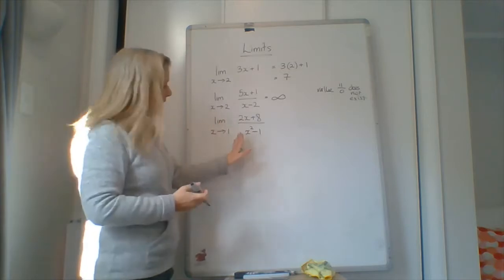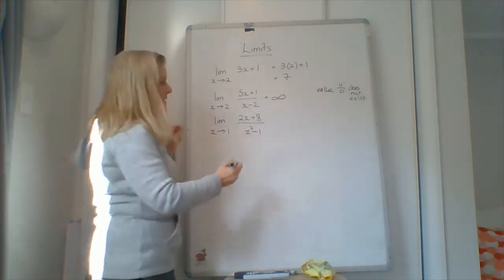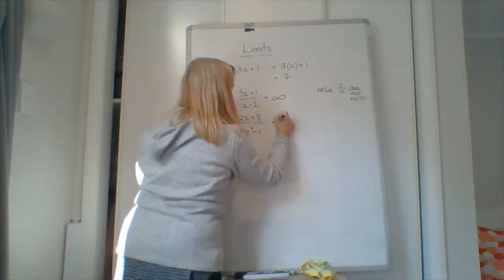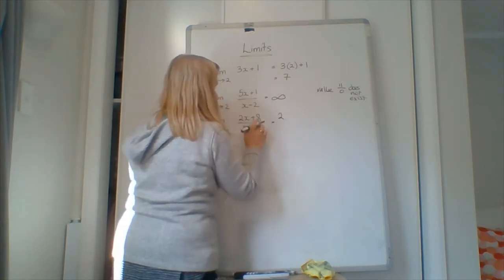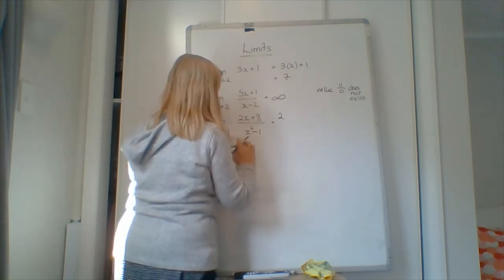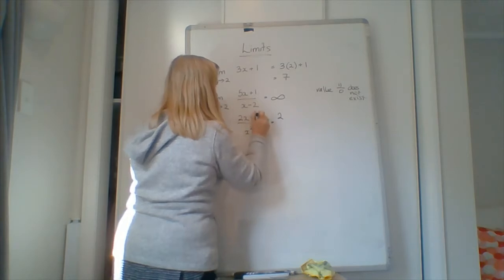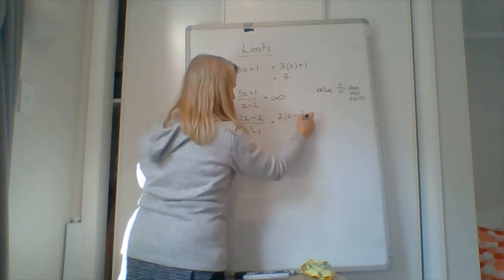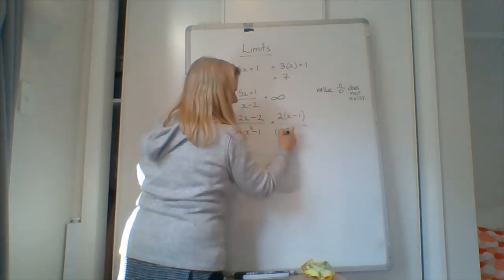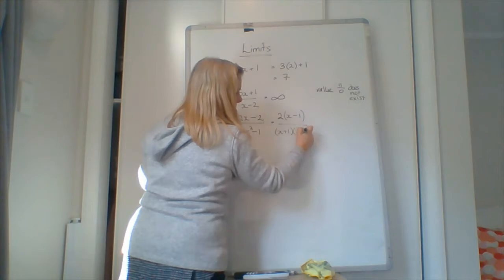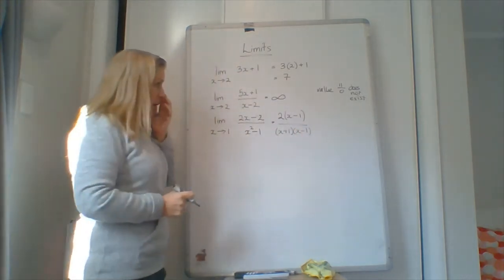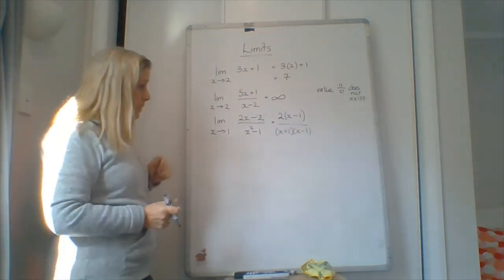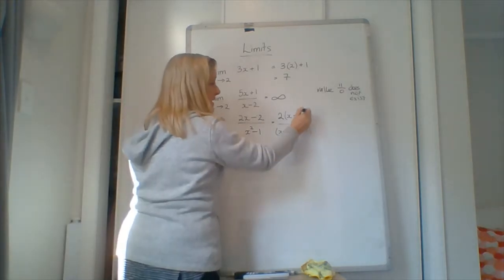Oh, I want to change that to minus 2. If we go 2x minus 1 over x plus 1 times x minus 1, then we can cancel these two out.